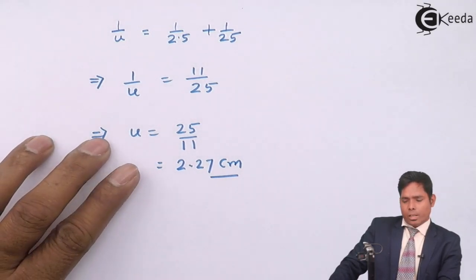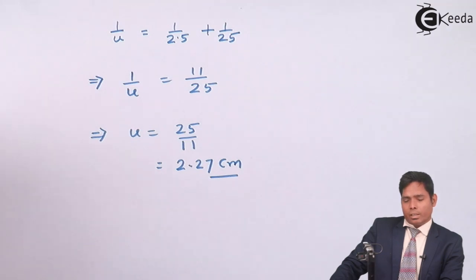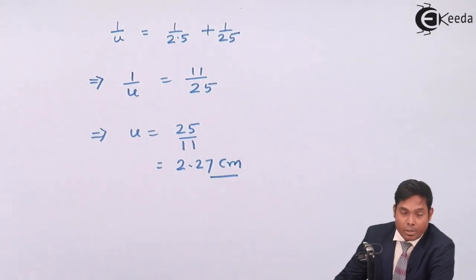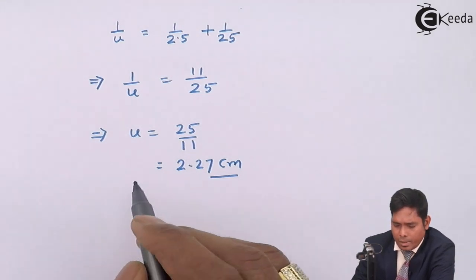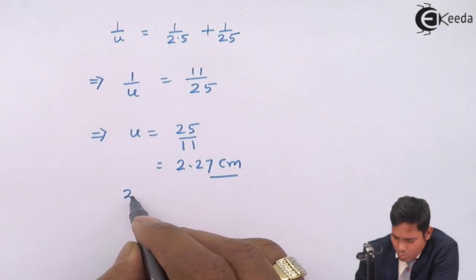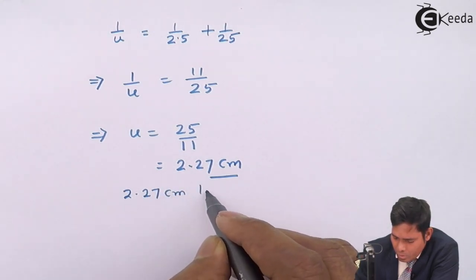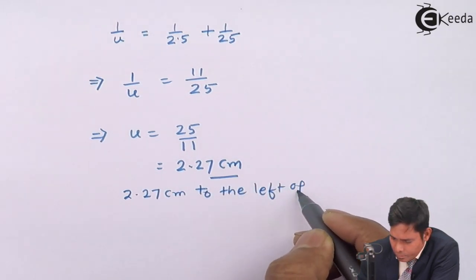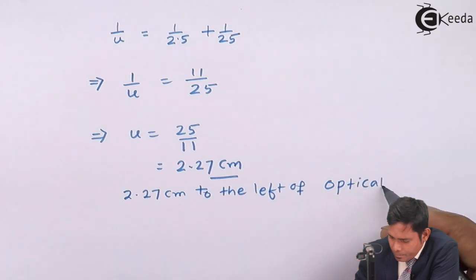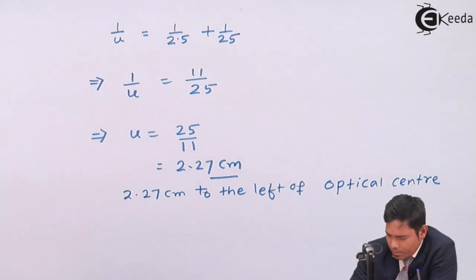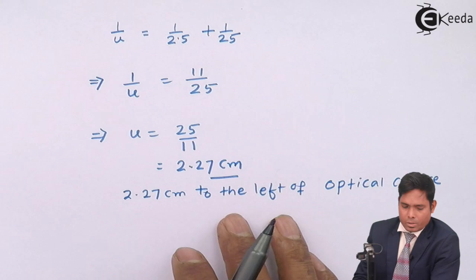In fact, it's positive because I already used the sign. So therefore it's coming up positive. If I would not have used the sign convention, this should have come out to negative. Because I already know that the object is always placed at the left, we can say that the object position is 2.27 centimeter to the left of optical center. Okay, this is the answer to this question.